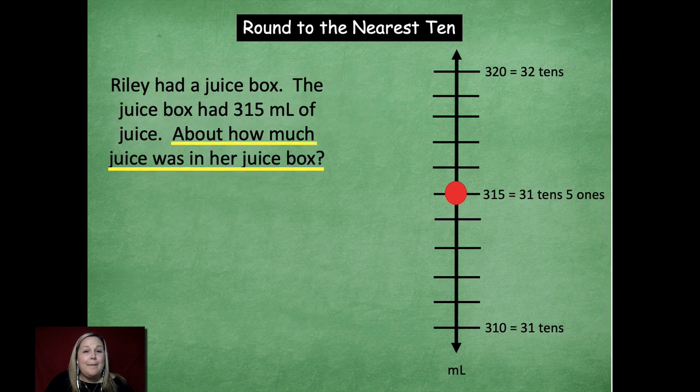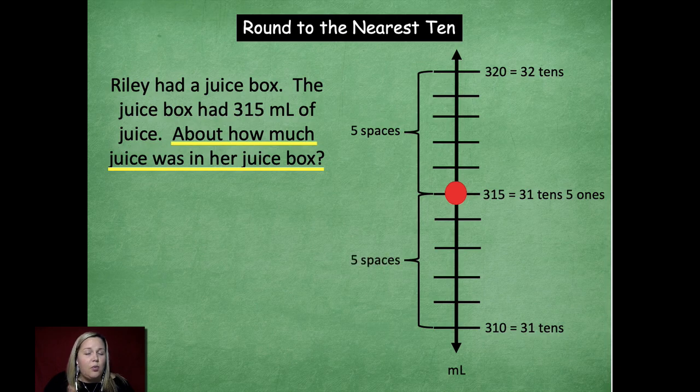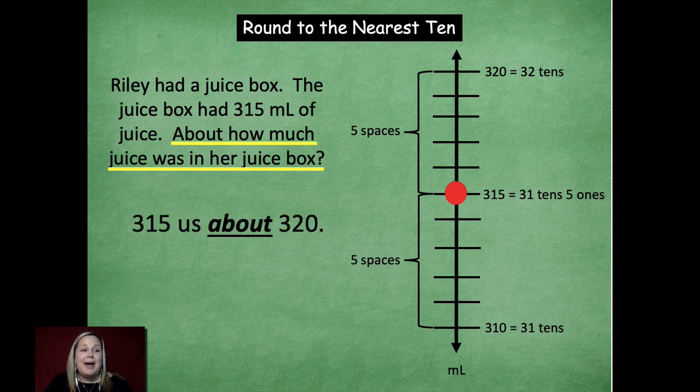So if we look, about how much juice was in her juice box. Go through. Oh, there's five spaces from here and five from here. Who remembers the rule? Well, what happens when you're right in the middle? Am I going to round up or am I going to round down? What do you do when you're right in the middle? Yeah, you're going to round up.